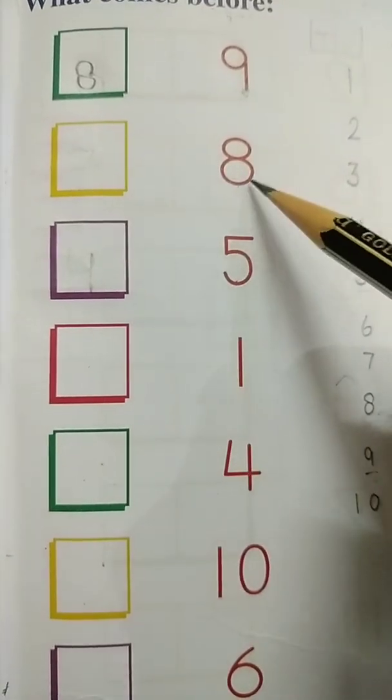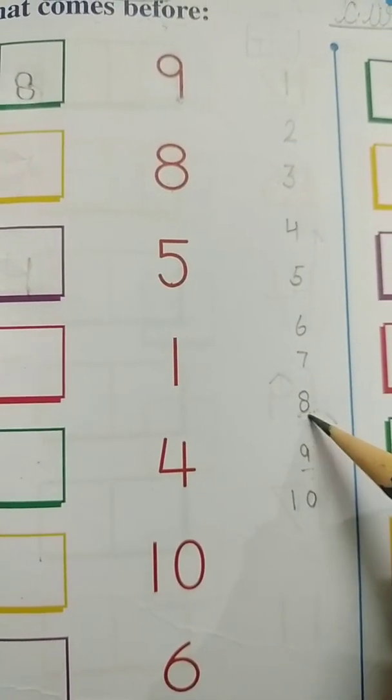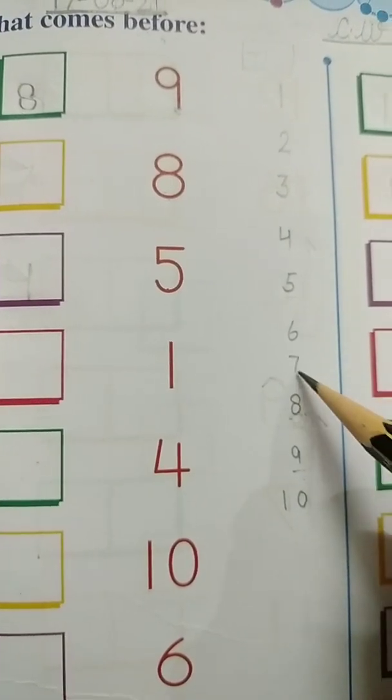Now where is 8? Here is 8. And what comes before 8? It is 7. So you all will write 7 here.